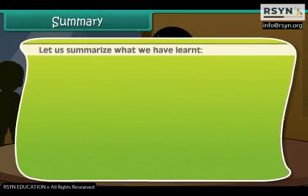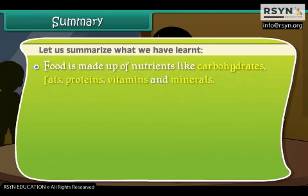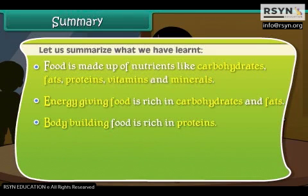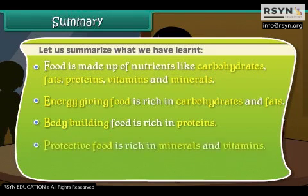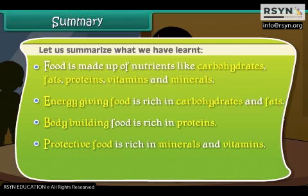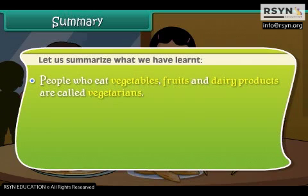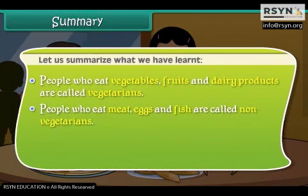Let us summarize what we have learned. Food is made up of nutrients like carbohydrates, fats, proteins, vitamins and minerals. Energy giving food is rich in carbohydrates and fats. Body building food is rich in proteins. Protective food is rich in minerals and vitamins. Plants make their food in their leaves. People who eat vegetables, fruits and dairy products are called vegetarians. People who eat meat, eggs and fish are called non-vegetarians. We should follow good food habits to stay fit and healthy.